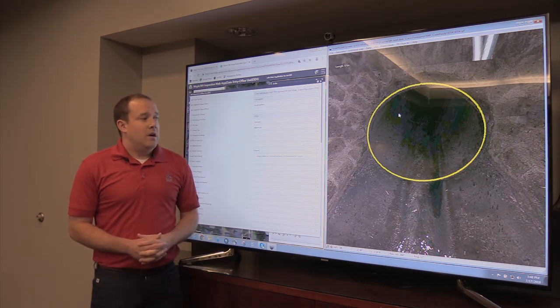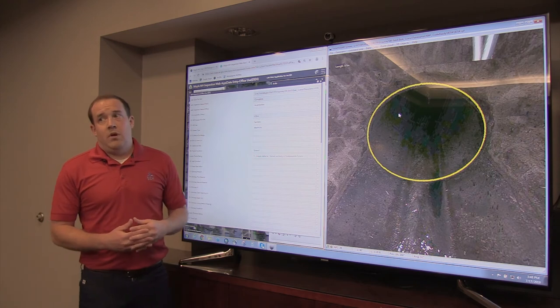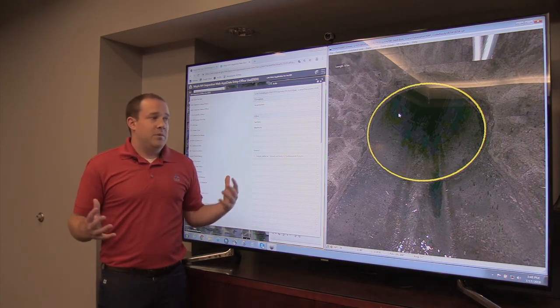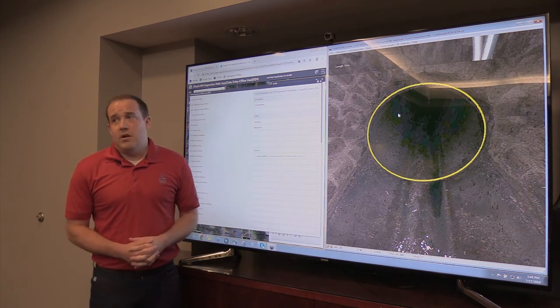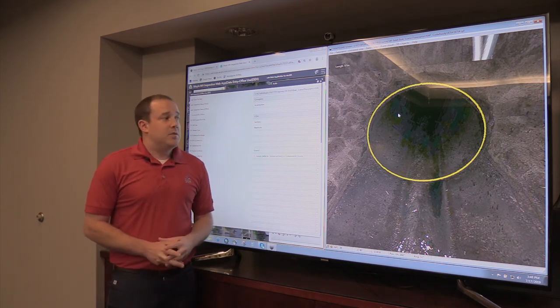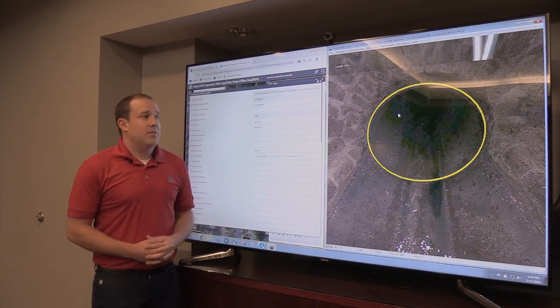From pipes, whether they're round to rectangular outfalls, anything like that, we're able to integrate that all into our inspection attributes and provide a very detailed overview of each structure.